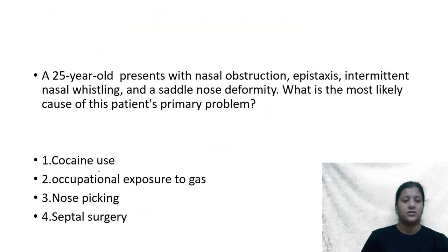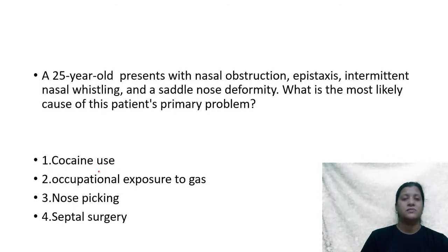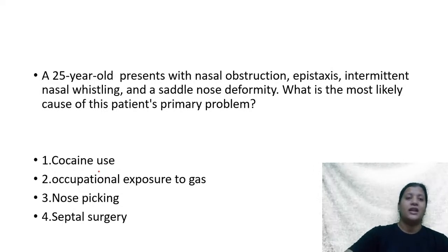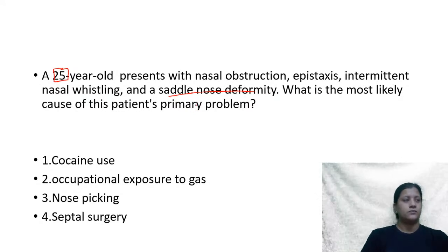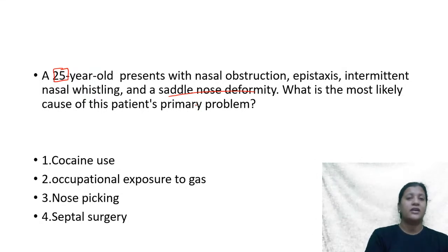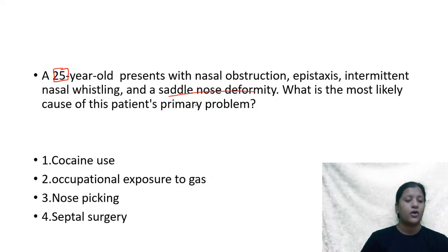Next question: a 25-year-old presents with nasal obstruction, epistaxis, intermittent nasal whistling, and saddle nose deformity. What is the most likely cause of this patient's primary problem — (A) cocaine use, (B) exposure to gas, (C) nose picking, or (D) septal surgery? Note: the acute complication of a septal hematoma is a septal abscess.